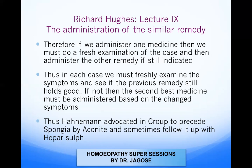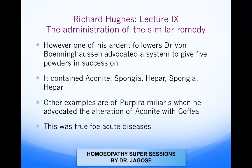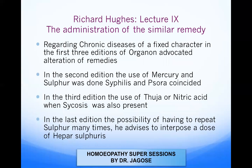Hahnemann advocated in croup to precede spongia with aconite and sometimes follow it up with hepar itself. One of his ardent followers, Boenninghausen, advocated a system of five powders in succession for croup: aconite, spongia, hepar, spongia, and hepar — in that order. Another example is Piper millaris, where he advocated alternation of aconite with coffea. This was true for acute diseases. Regarding chronic diseases of fixed character, in the first three editions of the Organon, he advocated alteration of remedies.